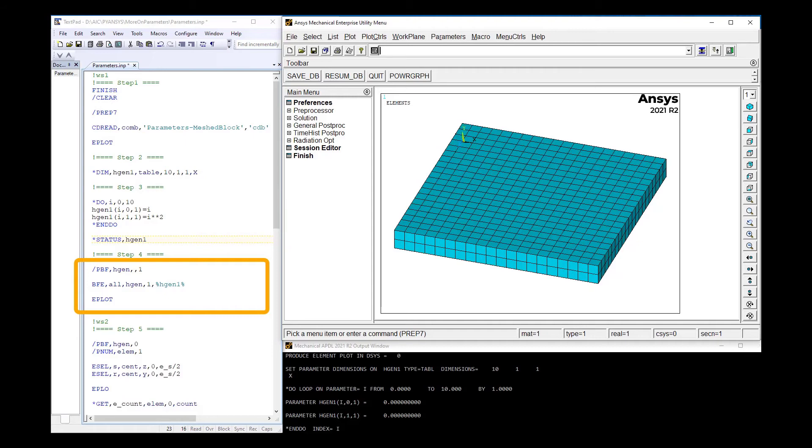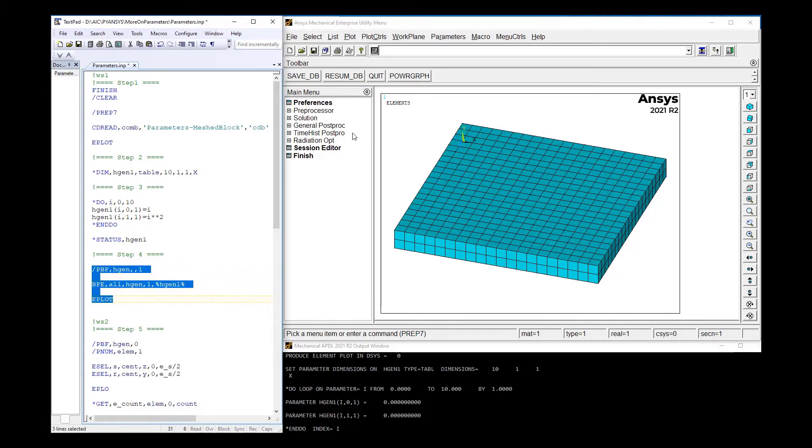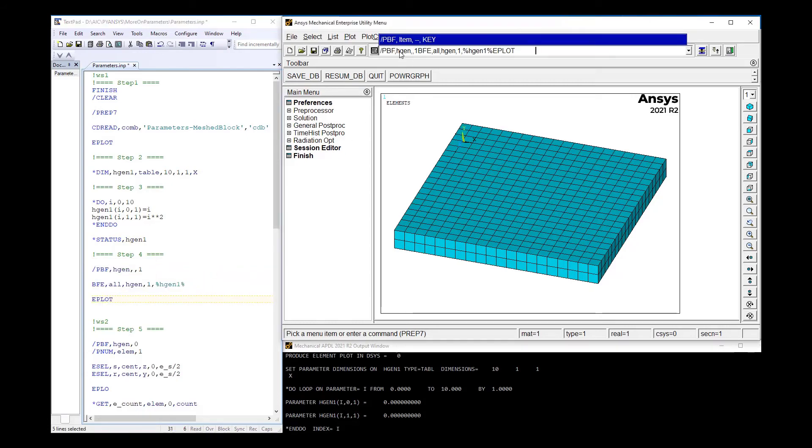We can choose to verify the applied load visually, so first we turn on the contour values of the applied heat generation with a /PBF command, and then define the load with the BFE command, making sure that the heat generation value is given as percent sign HGEN1 percent sign. Then plot the elements and inspect the result. And the heat generation rate looks acceptable.